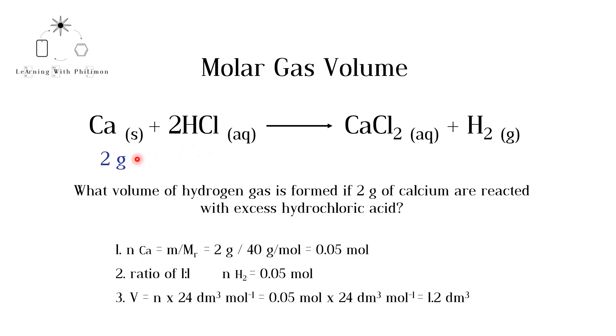In the question, we are given the mass of calcium, so we can calculate the moles of calcium using the equation N is equal to M divided by MR. Dividing 2 grams by the atomic mass of calcium, 40 grams per mole, we get 0.05 mole. There are 0.05 moles of calcium.